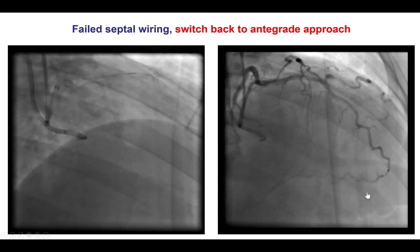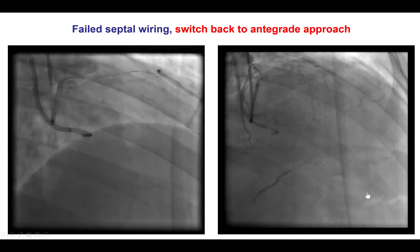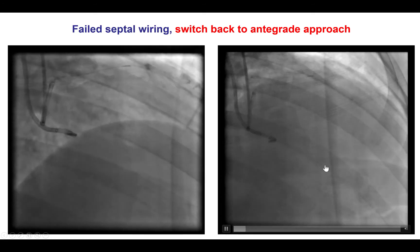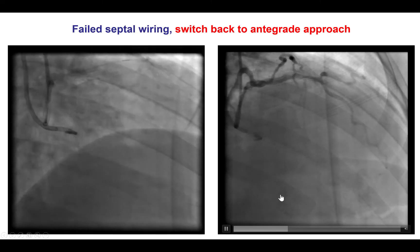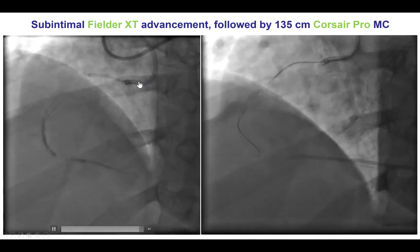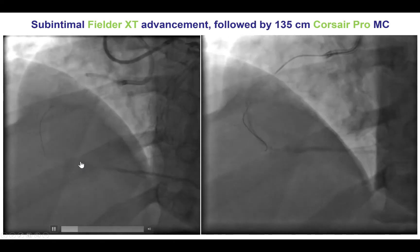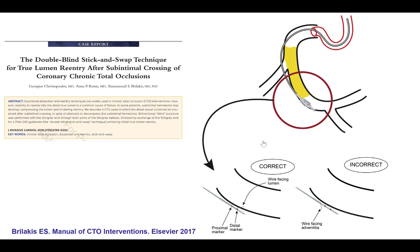Given the difficulties with support and subintimal guide wire position, we changed to the retrograde approach and attempted to enter through the septal collaterals, but had a very difficult time entering those collaterals. The main source appeared to be the apical LAD connecting via an epicardial collateral to the posterior descending artery and distal RCA. So we changed back to an antegrade approach, using a guide catheter extension for extra support, and were able to advance an antegrade knuckle guide wire to the mid-right coronary artery. We advanced the Corsair Pro to that area and attempted re-entry, initially trying the vertical part to minimize subintimal dissection extent.